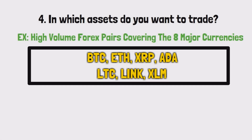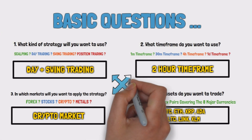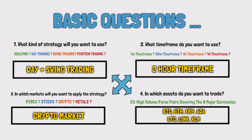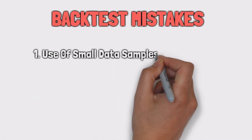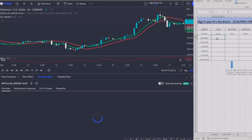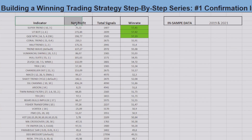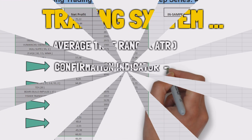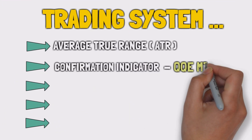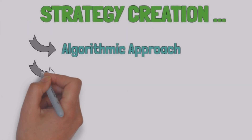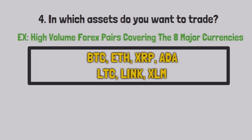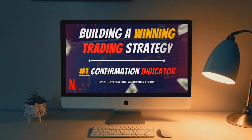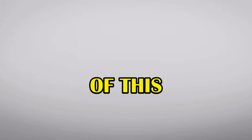In the first episode of this series, we covered all the fundamentals for creating a profitable and efficient trading strategy. We talked about risk management, backtesting, data samples, and we finished the episode by testing and choosing a consistent confirmation indicator, which will be the foundation of our strategy. If you haven't seen that episode, it's not worth watching this one right now because you will not understand it. Go watch the first episode and then move on to this one. The link is in the description of this video.